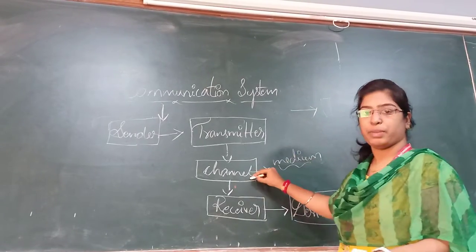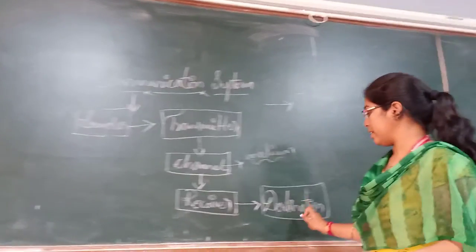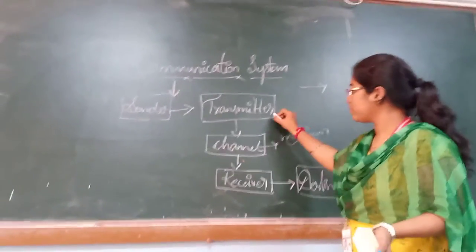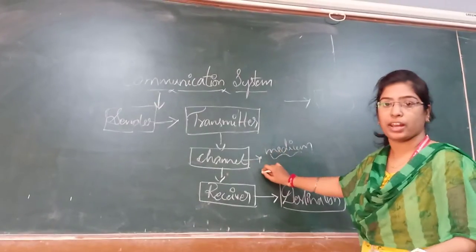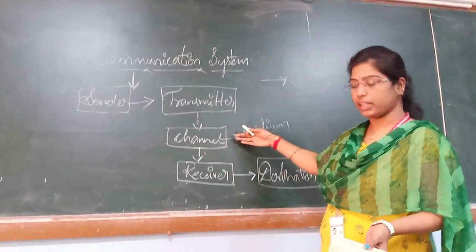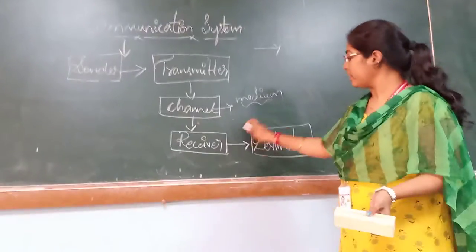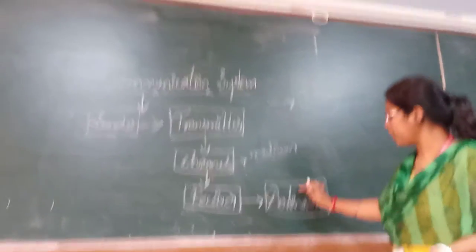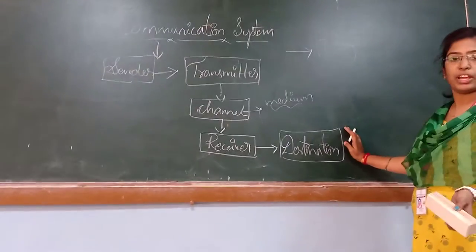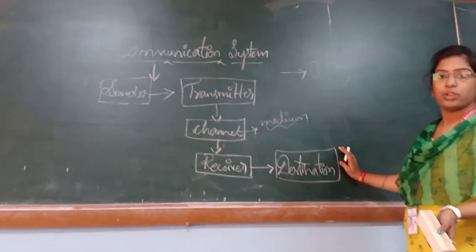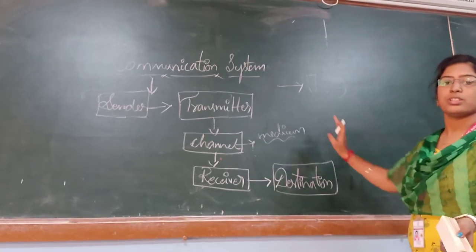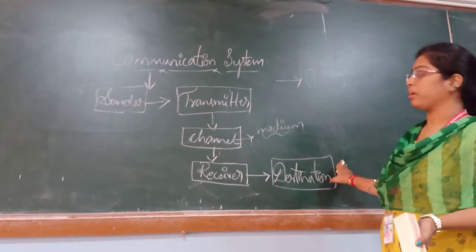The channel acts as a medium between the sender and the receiver. The transmitter will be sending data to the channel. From the channel, the receiver section will be taking the information. Then at the destination — destination is nothing but the end of the communication. Whatever information coming from the transmitter is received here. This is the system of the communication block.